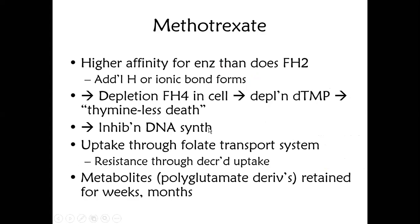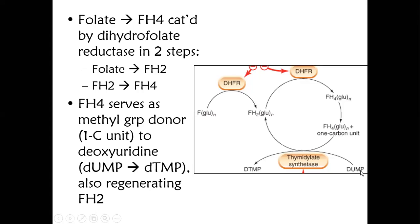The purpose of all these folate reactions is only one: to make dTMP from dUMP. For this conversion, we need one methyl group, and that methyl group is donated by FH4. All the reactions in this pathway happen just for that one methyl group. In the presence of thymidylate synthase enzyme, the methyl group is added to dUMP and it makes dTMP.